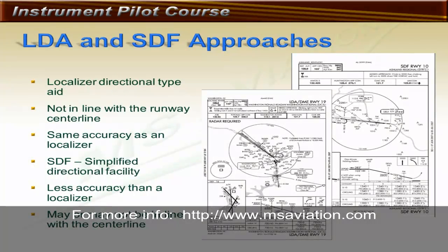In addition to the ILS, there are two other guidance systems that resemble an ILS but are slightly different: the localizer type directional aid (LDA) and the simplified direction facility (SDF). Both are usually installed as non-precision approaches because they do not usually provide glide slope indications. An LDA is a localizer not aligned within 30 degrees of a runway centerline but has the same accuracy as an ILS localizer. The SDF approach does not have the same accuracy as a localizer and may or may not be aligned with the runway centerline.